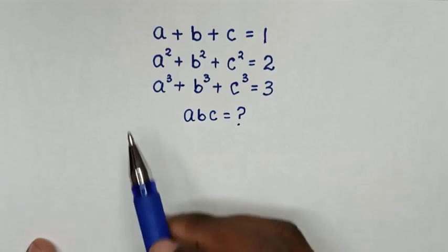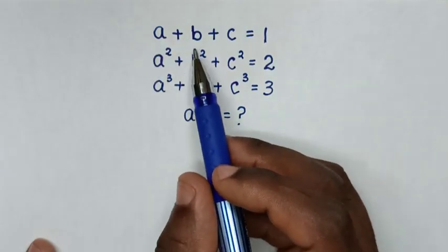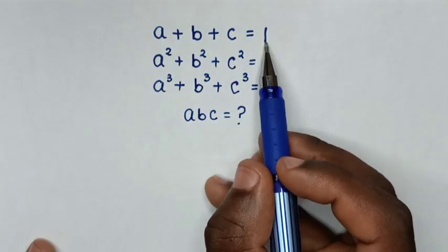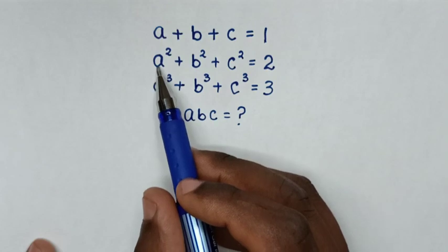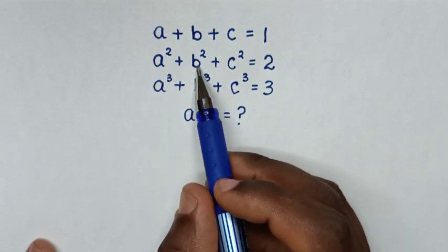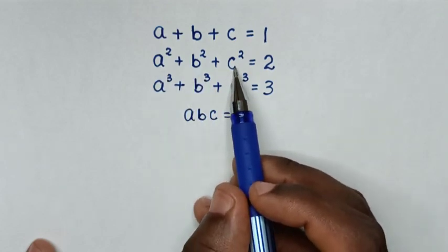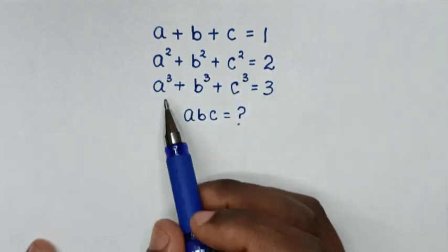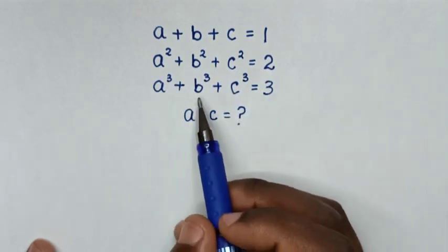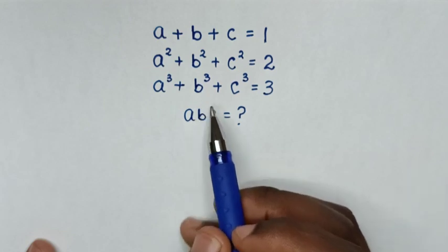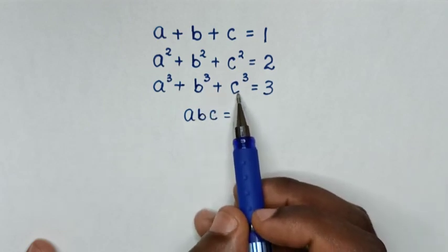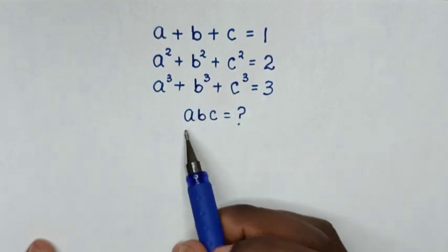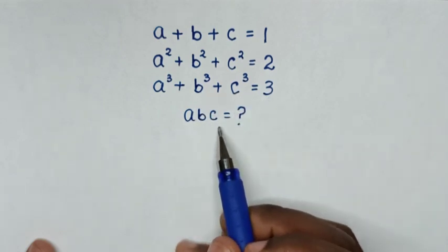Hello! How to solve: a plus b plus c equals 1, a squared plus b squared plus c squared equals 2, and a cubed plus b cubed plus c cubed equals 3. We need to find the value of abc.